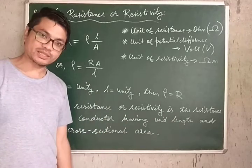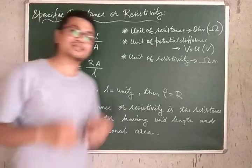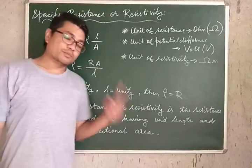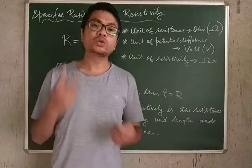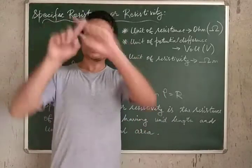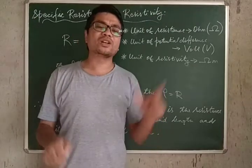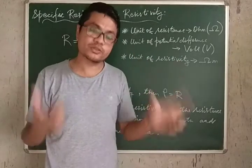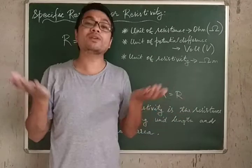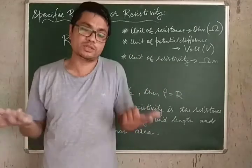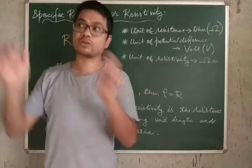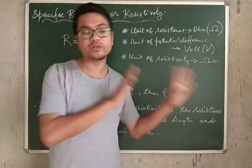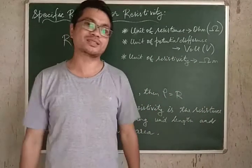We define specific resistance or resistivity as the resistance of a conductor having unit length and unit cross-sectional area. If two conductors are cut from the same metal piece — even if they have different lengths and different areas, giving them different resistances — they will have the same specific resistance or resistivity, since they are made of the same material.